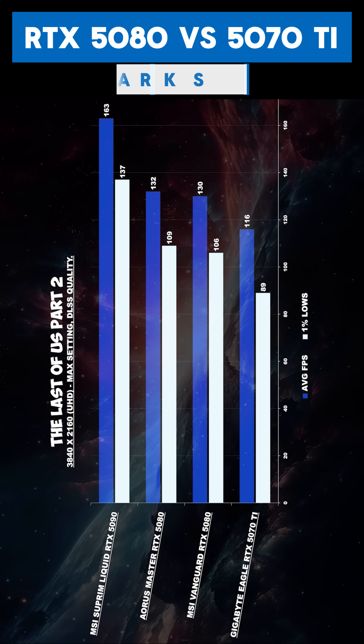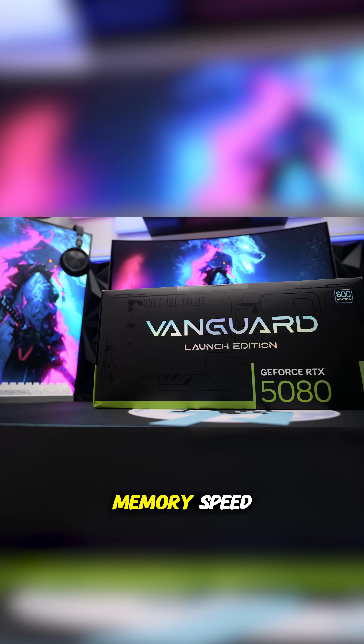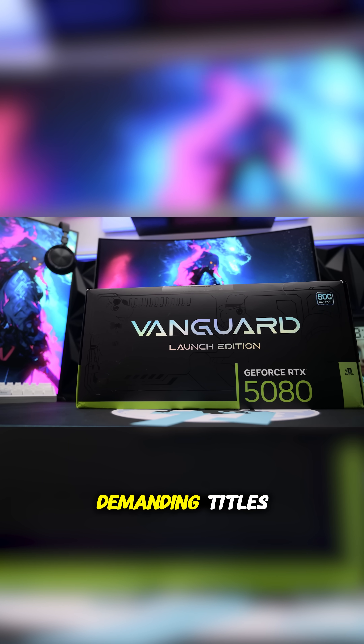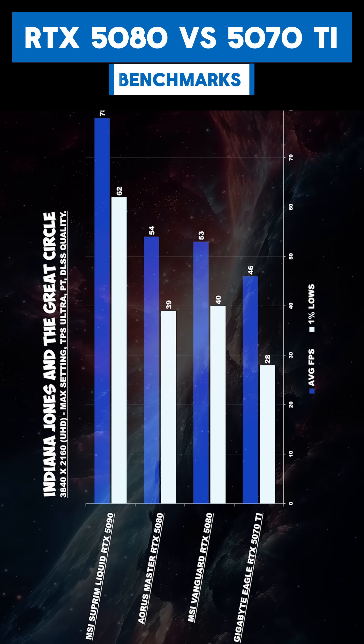Both cards come with 16GB of GDDR7 memory on a 256-bit bus. The RTX 5080 edges out in memory speed, giving a higher memory bandwidth for demanding titles. Power-wise, the RTX 5080 ideally needs an 850-watt PSU, while the 5070 Ti is a bit more forgiving and only requires 750 watts.